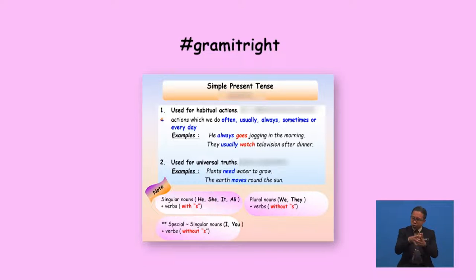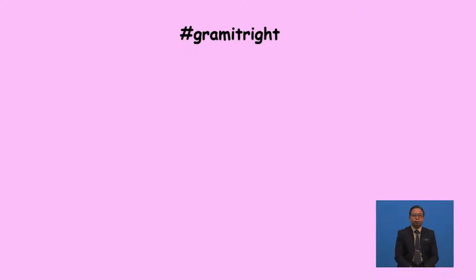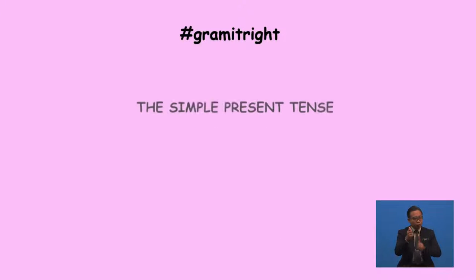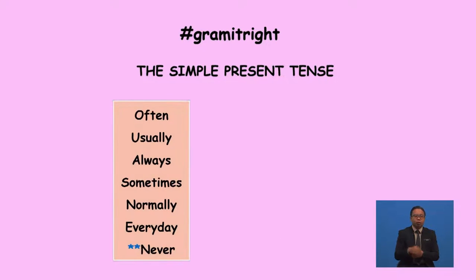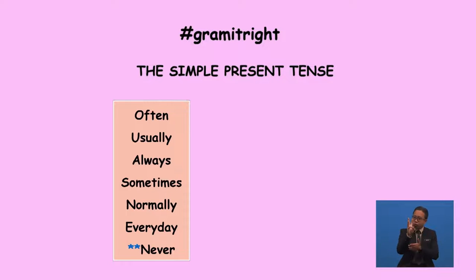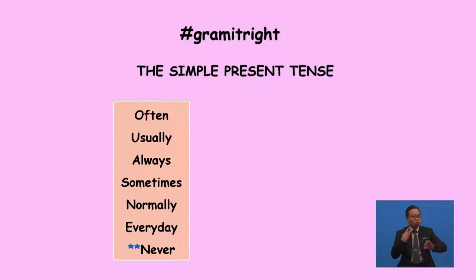Verbs in simple present tense describe actions which we do often, usually, always, sometimes, normally, or even every day. Remember, these six words are important. If we notice they appear in a sentence, we have to use simple present tense.